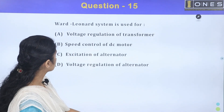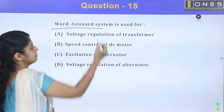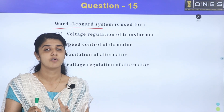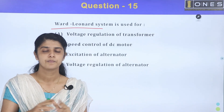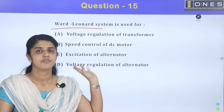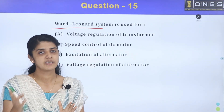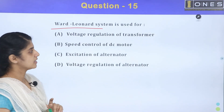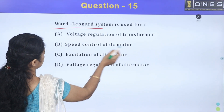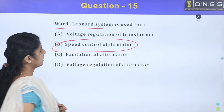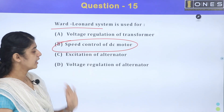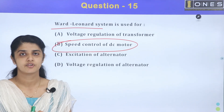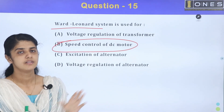Next question: What is the Leonard system used for? This is an important topic. If we use a DC motor with speed control methods, the Leonard system — a motor-generator set — is used for speed control of a DC motor.